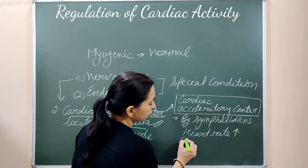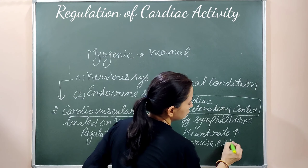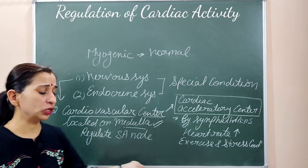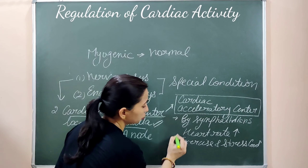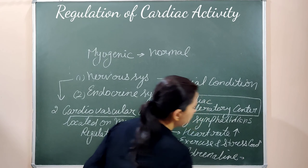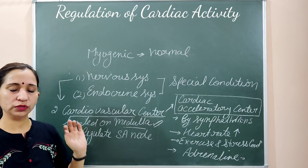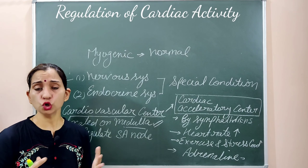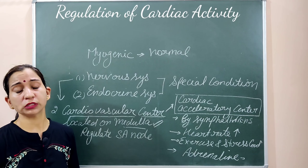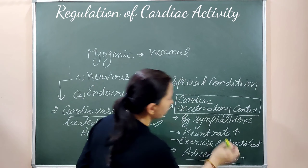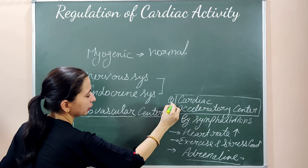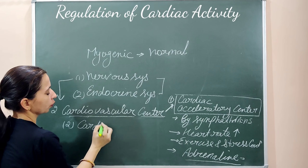When the cardiac acceleratory center works, it increases the heart rate during exercise and stress conditions. The neurotransmitter involved here is adrenaline. So the cardiac acceleratory center works under the sympathetic nervous system, increases the heart rate, and the neurotransmitter released is adrenaline.